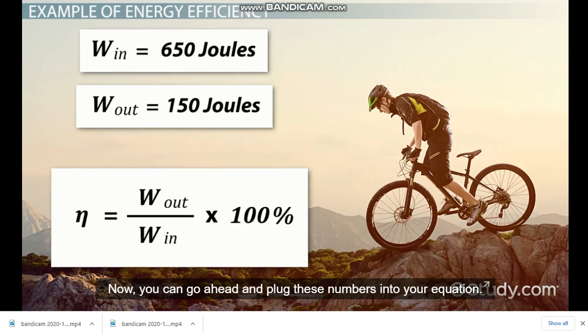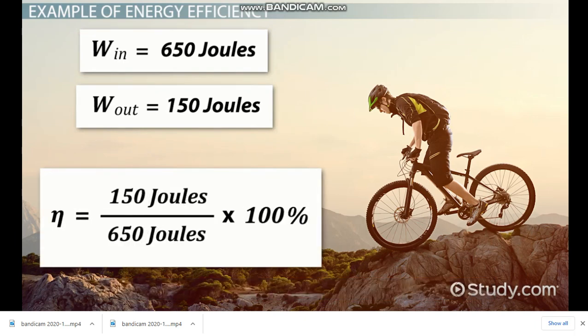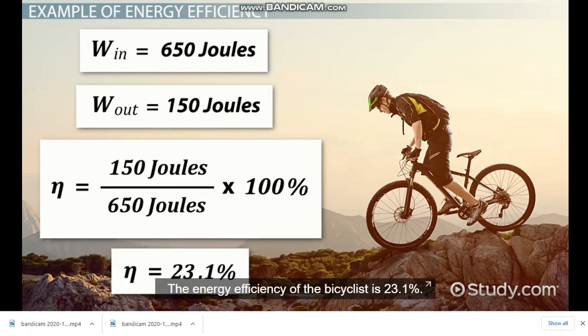Now, you can go ahead and plug these numbers into your equation. As you can see, it's 150 joules divided by 650 joules times 100%. The energy efficiency of the bicyclist is 23.1%.